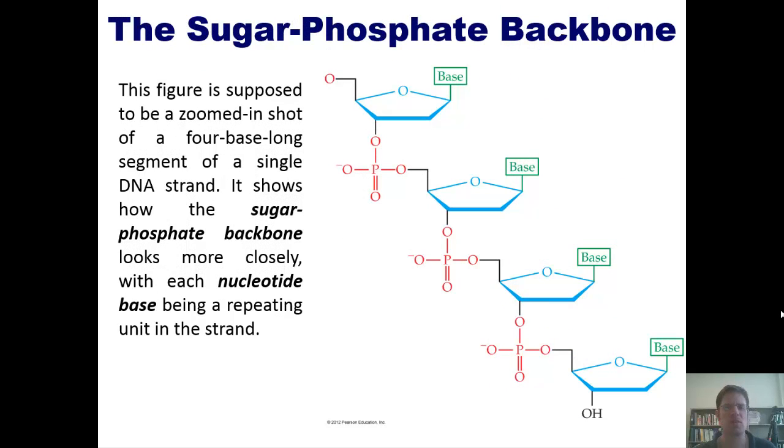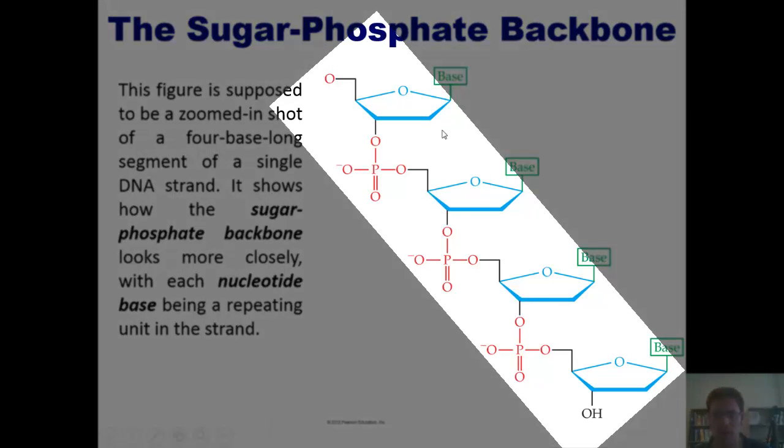So this figure is supposed to be a zoomed-in shot of the four-base-long segment of a single DNA strand. It shows how the sugar phosphate backbone looks more closely, with each nucleotide base being shown up here in this cute little green box as a repeating unit in the strand. So this is, once again, the sugar phosphate backbone that was depicted as a ribbon in the previous slide.